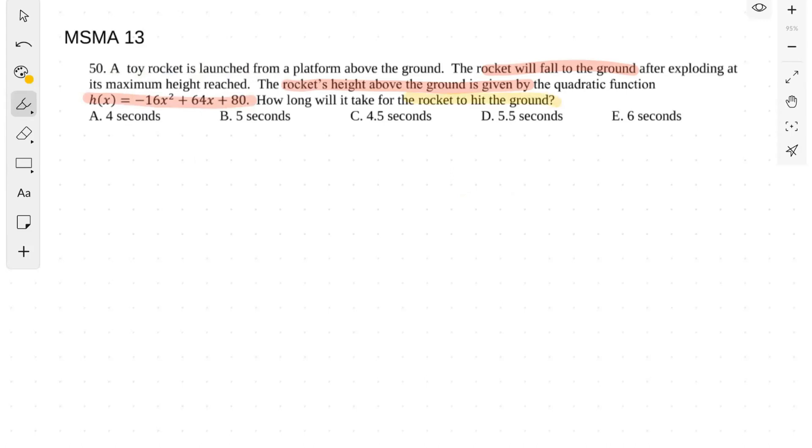So basically, the equation that they give us, we can make a quadratic function from it. You have this—the trajectory of the rocket. The y-axis represents the height and the x-axis represents the time that's passed.